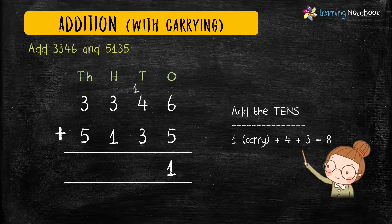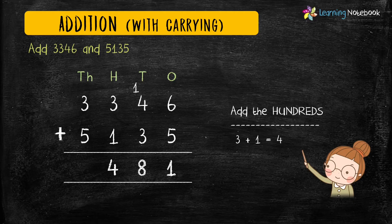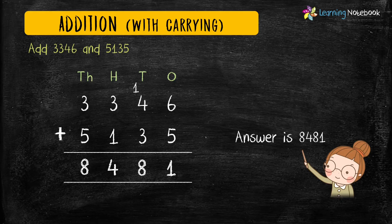Now let's add the digits at tens place: 1 carry plus 4 plus 3 equals 8. Then add the digits at hundreds place: 3 plus 1 equals 4. And now add the digits at thousands place: 3 plus 5 equals 8. So our answer is 8481.